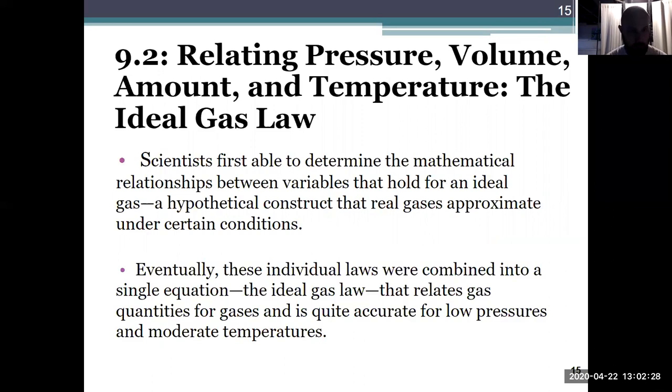Now no gas is ideal at every pressure and temperature. An ideal gas is a hypothetical construct that our real gases—things like air or different gaseous molecules—can approximate depending on the conditions they're at, specifically their pressure and temperature. So we'll look at those relationships individually then put them into one equation that's known as the ideal gas law.